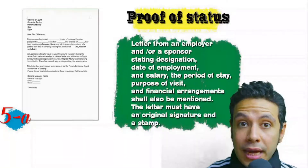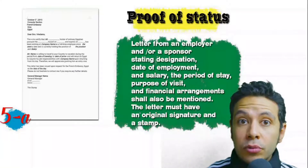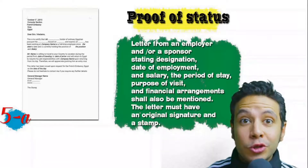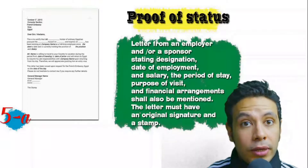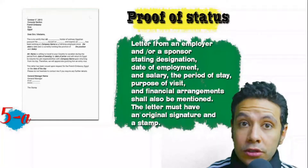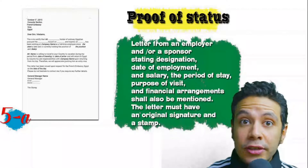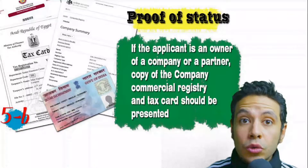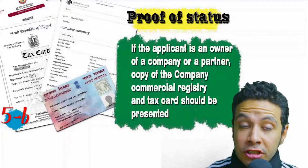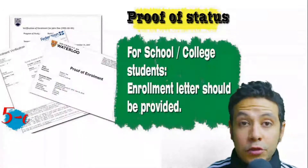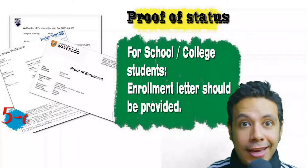In most visa application processes you will be required to provide a proof of status. If you are an employee, provide a letter from your employer or HR department mentioning your name, work details, salary, address, and contact number. The letter must have an original signature and stamp. If you own a business, your commercial registry and tax card must be presented.